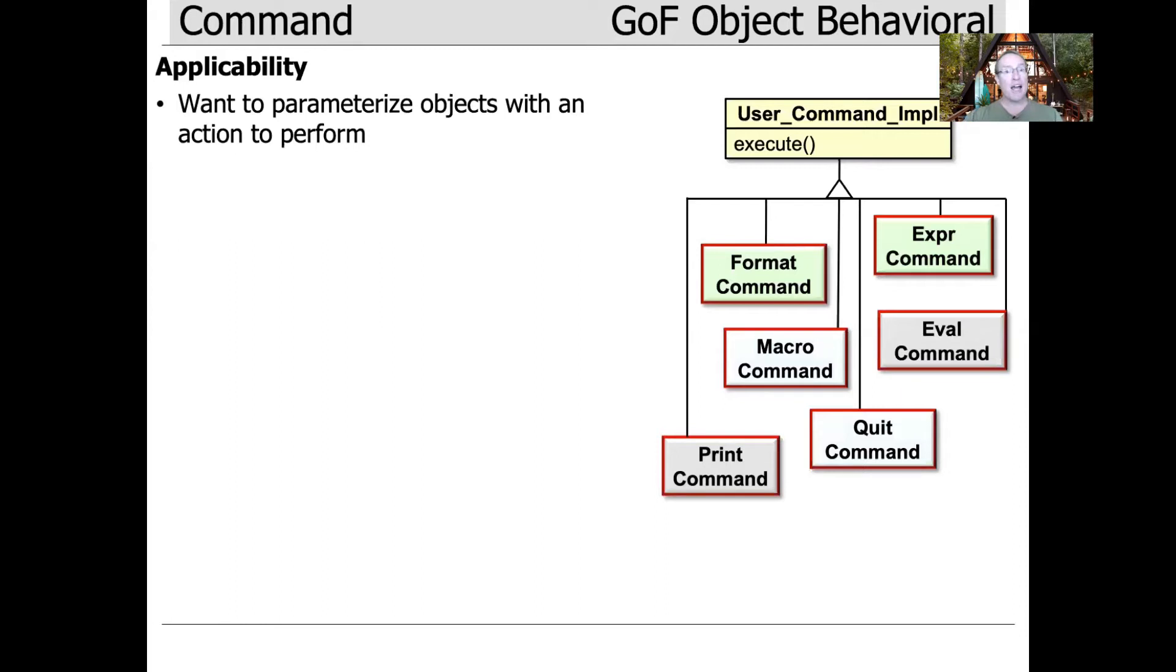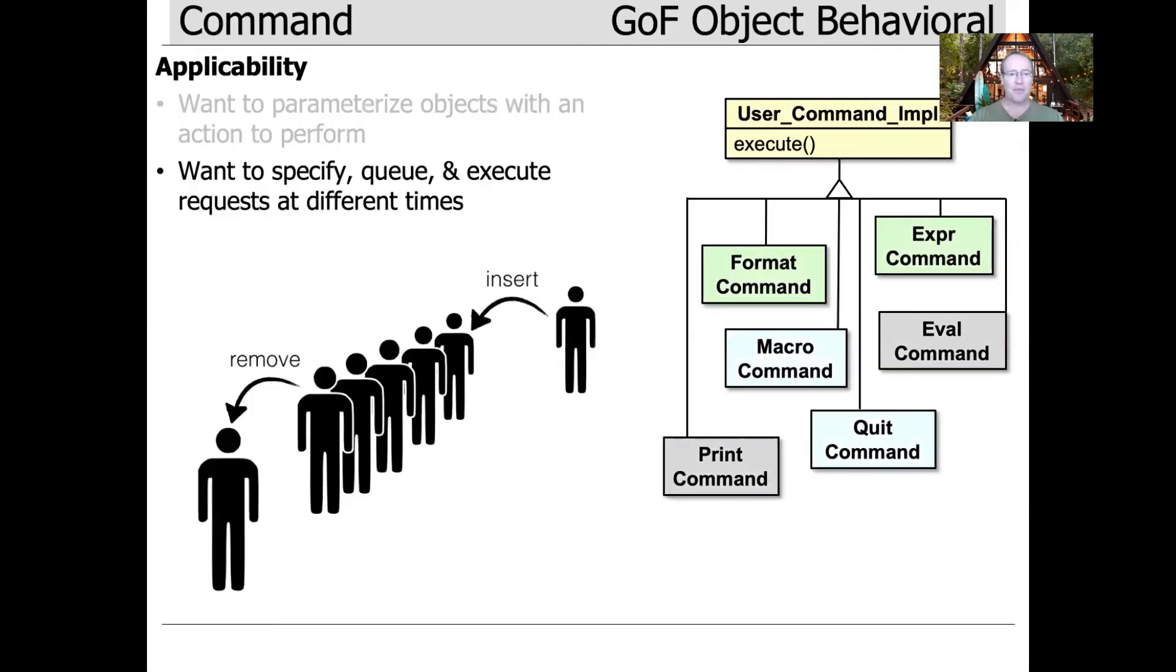When would you apply this pattern? The Gang of Four says apply this pattern if you want to parameterize objects with actions to perform. Each object, which is an instance of a subclass of the command base class, will be given a different execute method to do its thing. In our case, we want to do formatting, setting an expression, printing, evaluating, and so on.